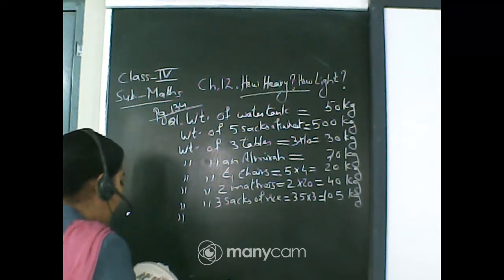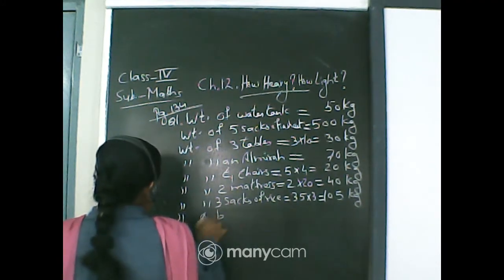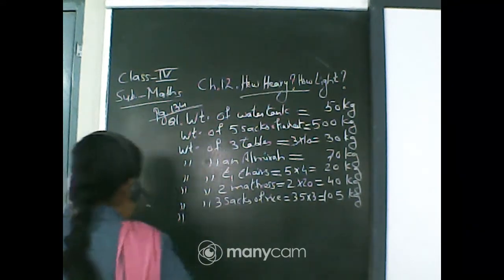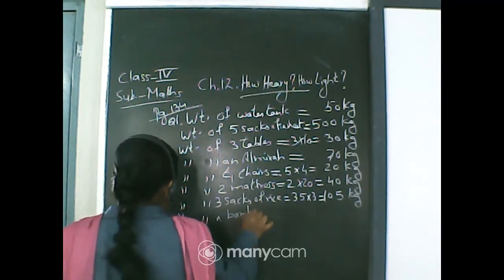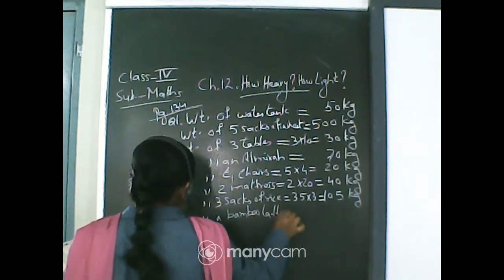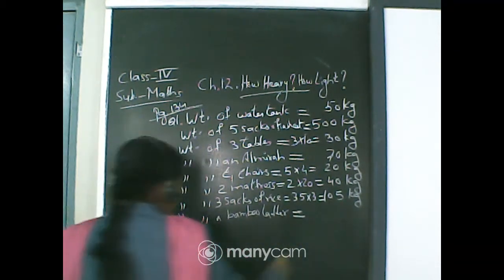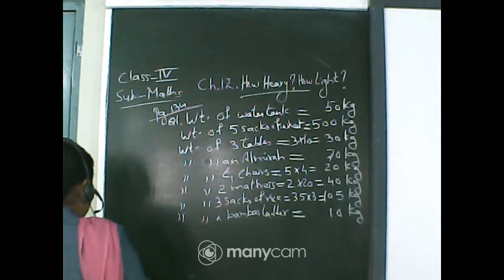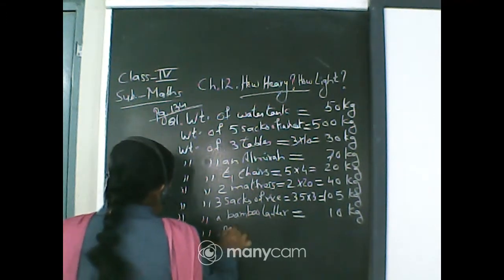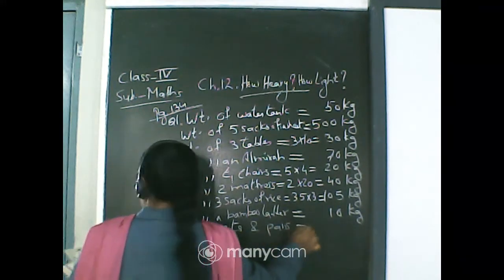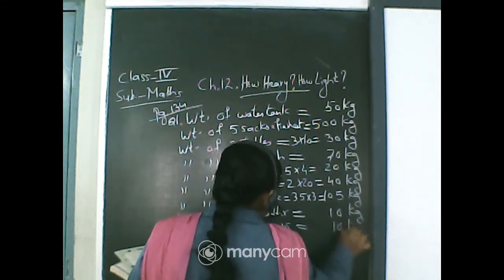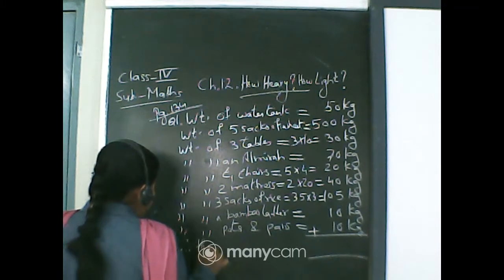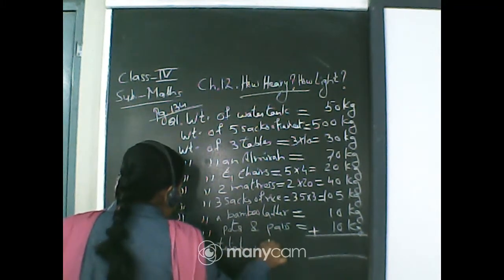Next they loaded a bamboo ladder, which weighs 10 kg. Then pots and pans, which is given as 10 kg. Now add all of these together to find the total weight.